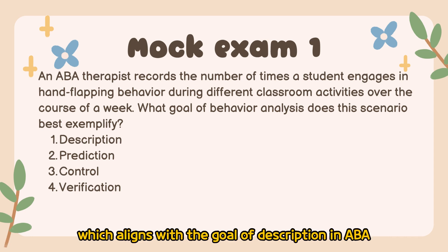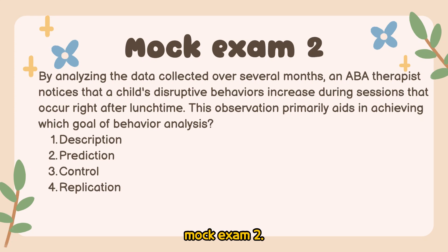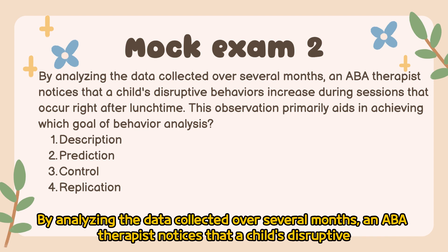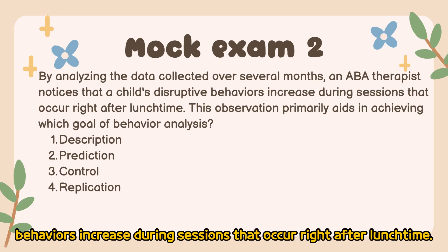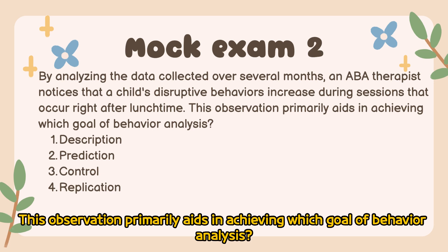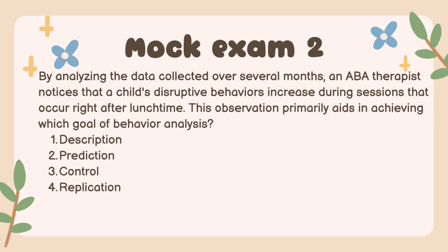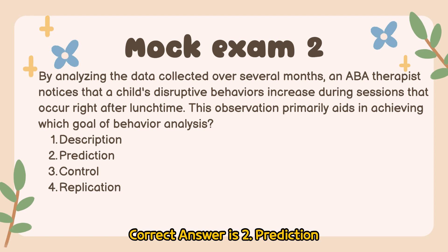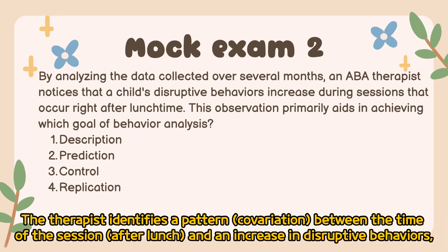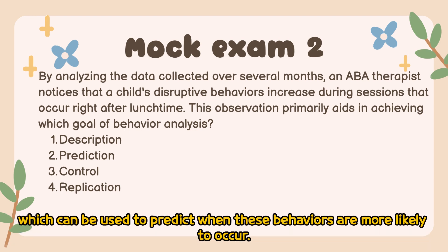Mock Exam 2: By analyzing data collected over several months, an ABA therapist notices that a child's disruptive behaviors increase during sessions that occur right after lunchtime. This observation primarily aids in achieving which goal of behavior analysis? 1. Description, 2. Prediction, 3. Control, 4. Replication. Correct answer is 2 — Prediction. The therapist identifies a pattern — covariation between the time of the session (after lunch) and an increase in disruptive behaviors — which can be used to predict when these behaviors are more likely to occur.